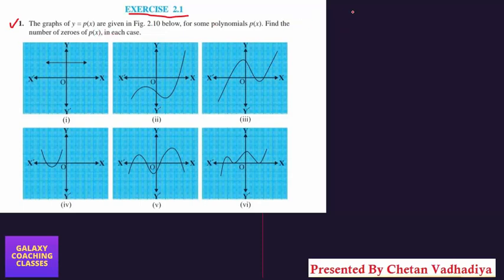So what is this actually? For any given polynomial, we can draw a graph and find out the zeros from the graph. If quadratic is given to you, if cubic is given to you, or biquadratic is given to you, any polynomial is given to you, then you can draw a graph.